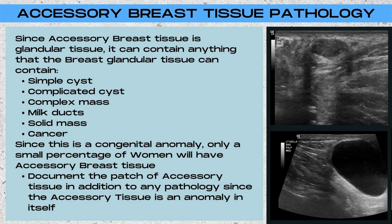Now let's talk about accessory breast tissue and breast pathology. Since accessory breast tissue is glandular tissue, it can contain or develop anything that breast glandular tissue can — such as simple cysts, complicated cysts, a complex mass, milk ducts, solid masses, and cancer. Since this is a developmental anomaly, only a small percentage of women will have accessory breast tissue. When you find a patch of accessory breast tissue, you need to document two things: first, the patch of accessory breast tissue itself, because it is an anomaly; and second, any pathology within that patch.